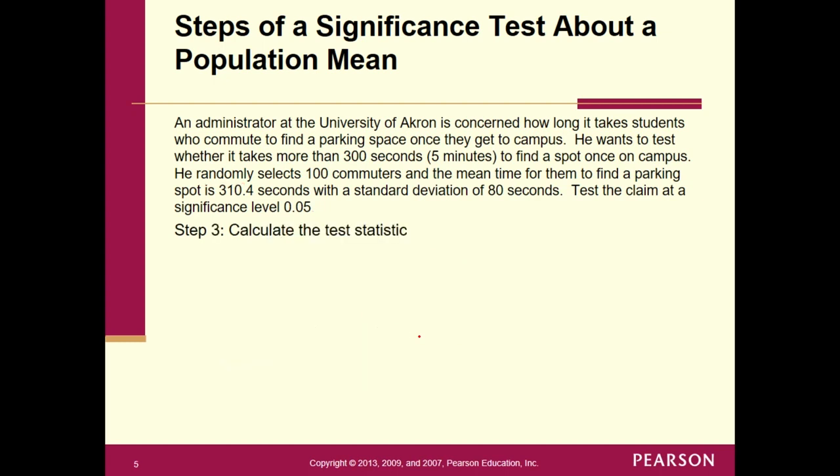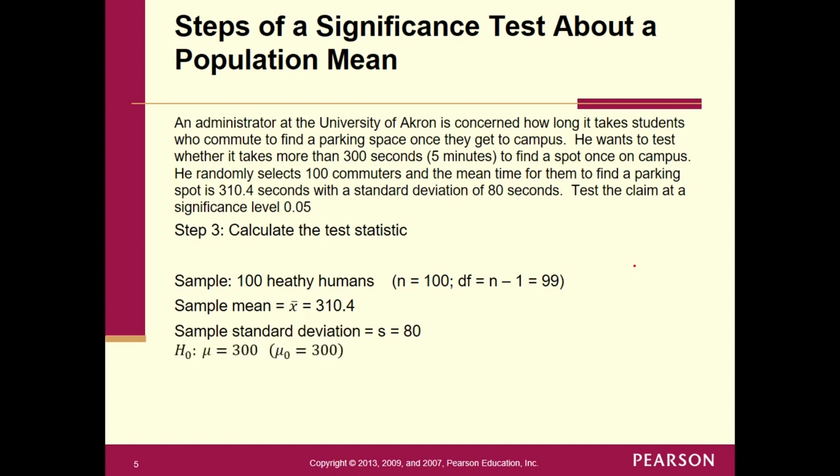All right. Moving on. Step three, calculate the test stat. And so let's go through the pieces of parts again. So we have an n of 100. We have a sample mean of x-bar of 310.4. We have a sample standard deviation of 80. And there's our value in the null hypothesis. So I think we have everything that we need. All right. So let's go ahead and put in the values. So we've got 310.4 minus 300. That's mu sub 0. There's s. There's n. All right. And remember when you put in your calculator, parentheses here. And probably it would be a good idea to put parentheses down here too. And don't forget two division signs. So 310.4 minus 300 in parentheses divided by in parentheses 80 divided by square root of 100. I got here 1.30 for your test stat.